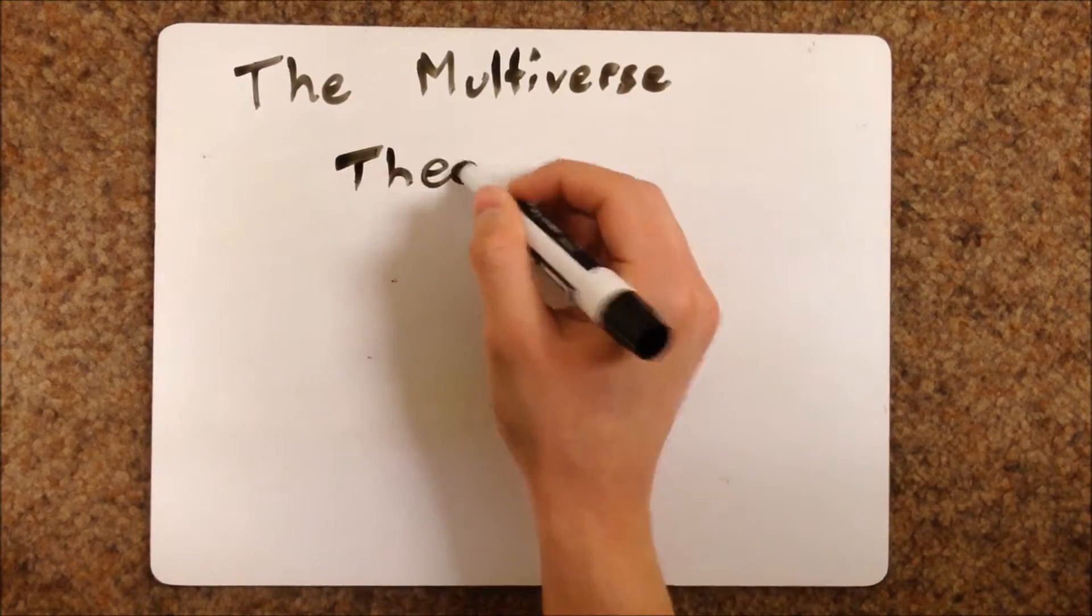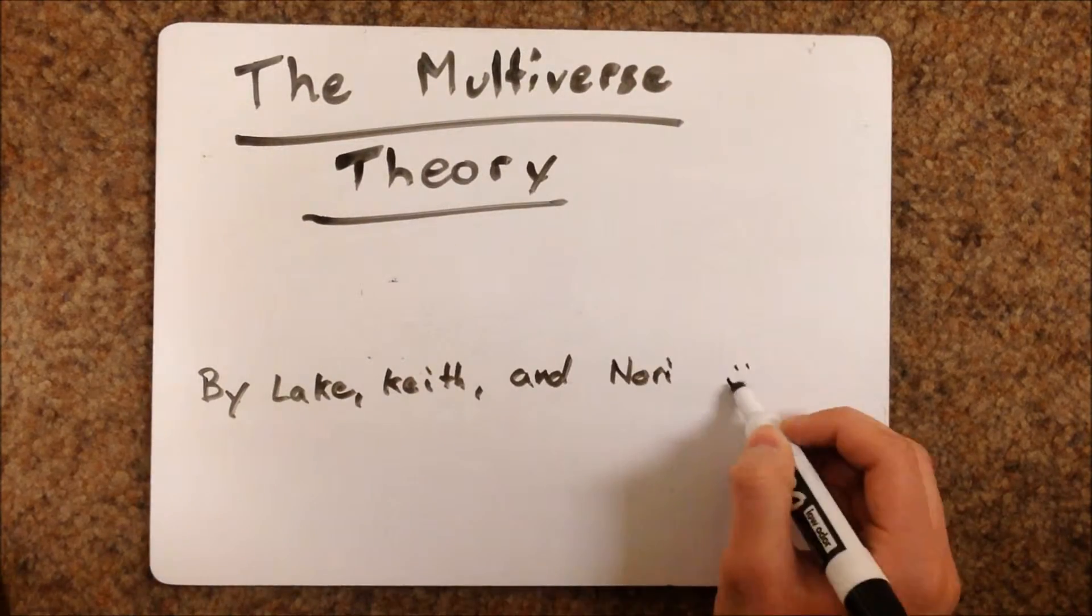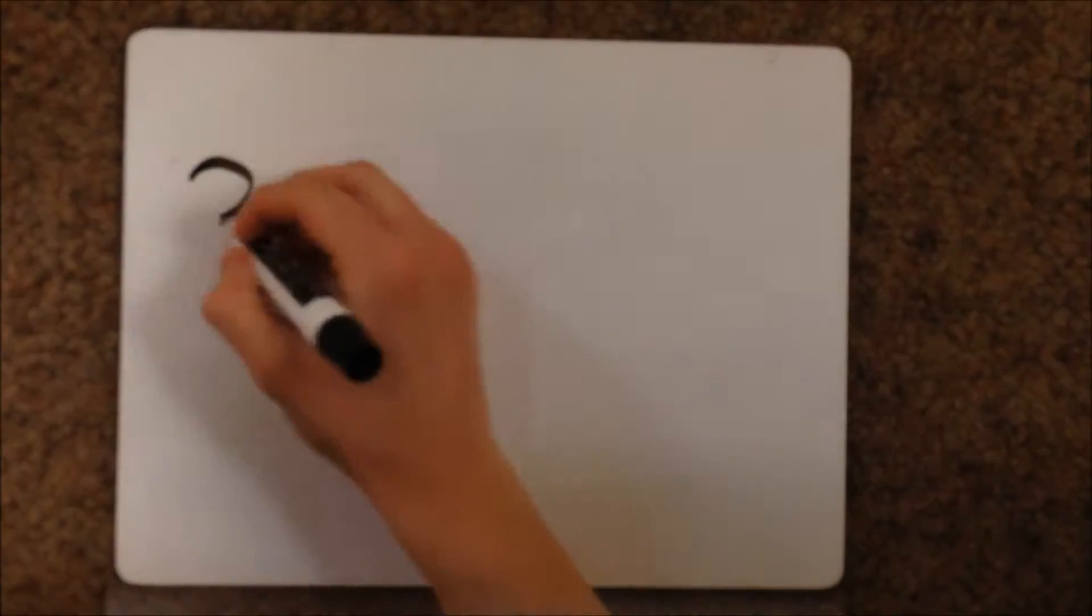The multiverse is a theory which attempts to explain everything that exists or ever can exist. There are three main categories that comprise the multiverse theory.